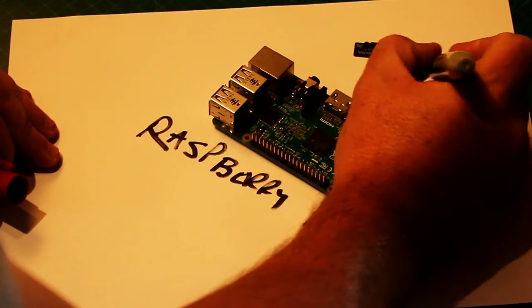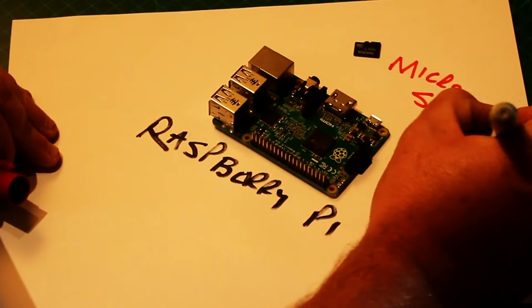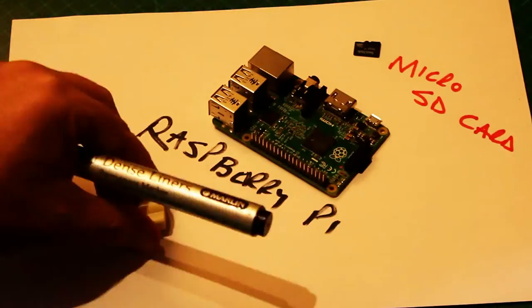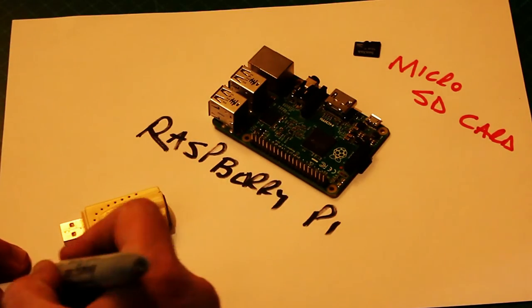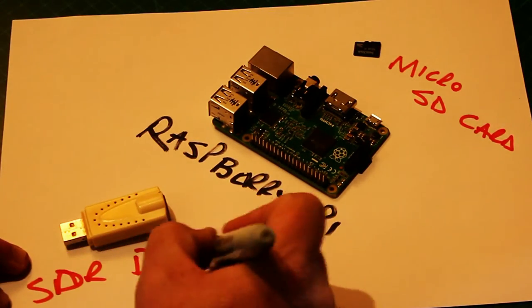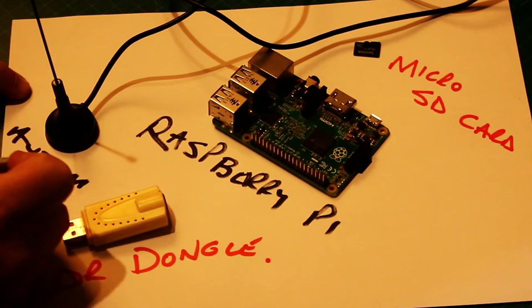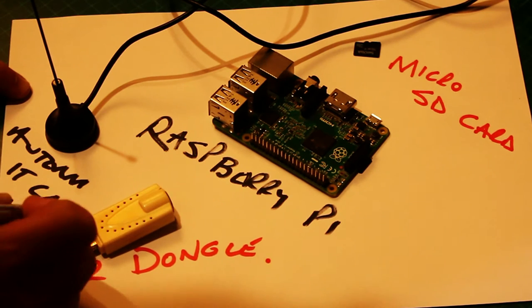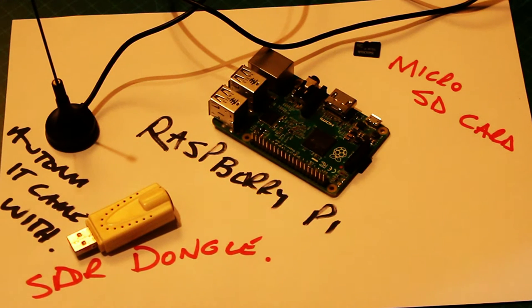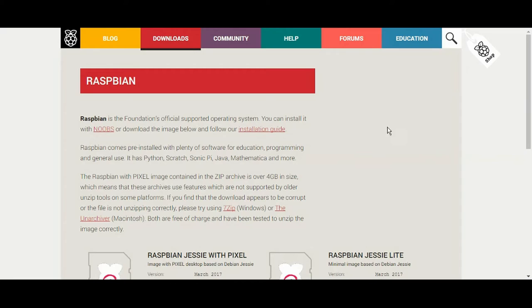All you'll need is a Raspberry Pi, USB receiver stick, micro SD card to put the software on, and the antenna that the stick came with. Oh, and an internet connection. All for less than $100 if you DIY it, but kits are available.